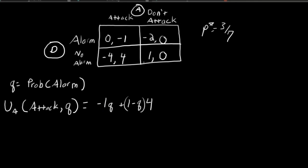It is easy to see that the attacker's expected utility when he does not attack is just zero. Why? Because whenever he doesn't attack, regardless of what the defender does, he's always earning zero. So for the attacker to be indifferent, his expected utility by attacking has to equal zero.